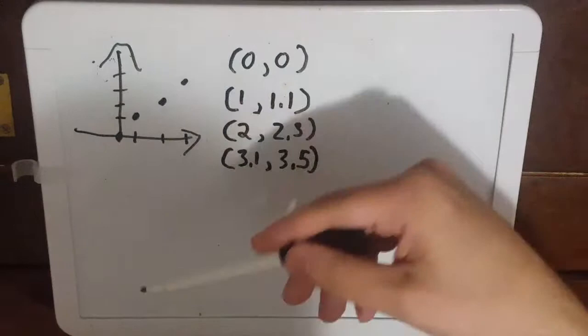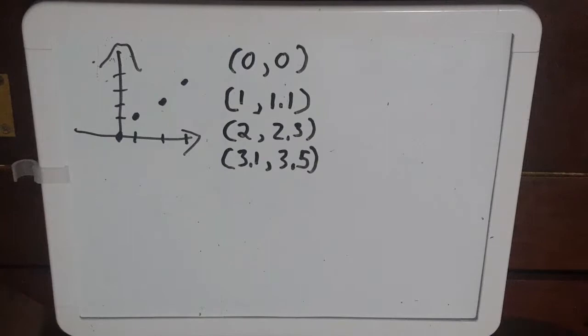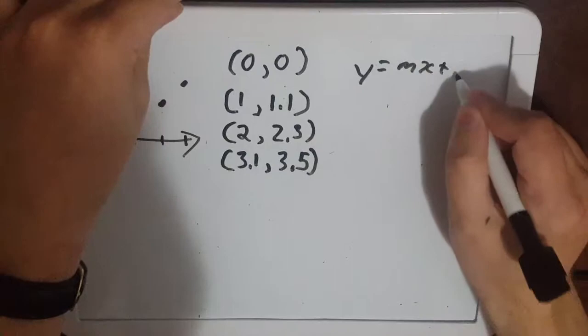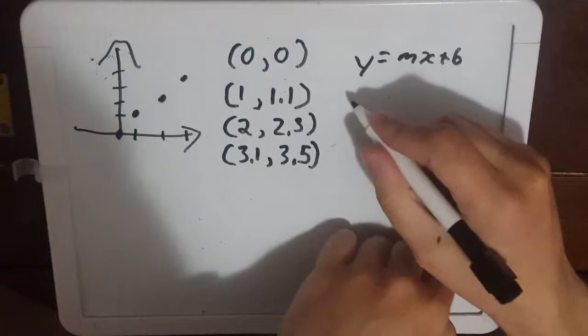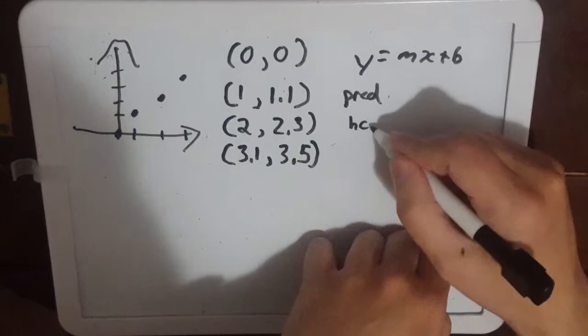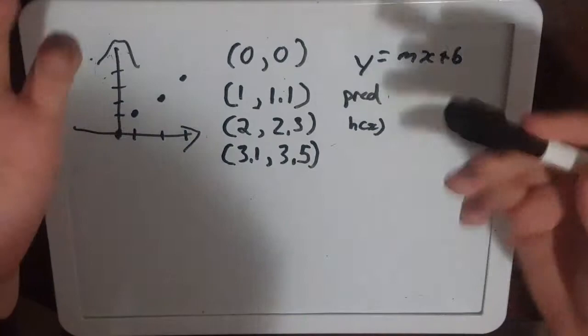Okay, so we're making a line so remember Y equals MX plus B. Now I'm going to change this to some very simple terms so instead of Y I call it the prediction. You might also see this as H of X, that's more in like textbooks and the H just kind of means our hypothesis. Okay, don't worry about that now.